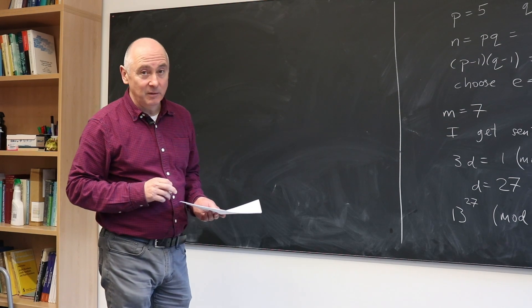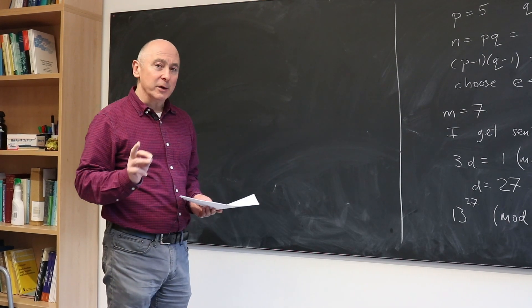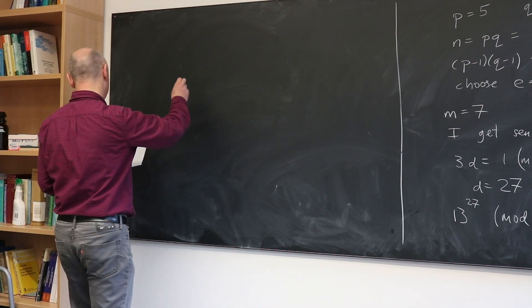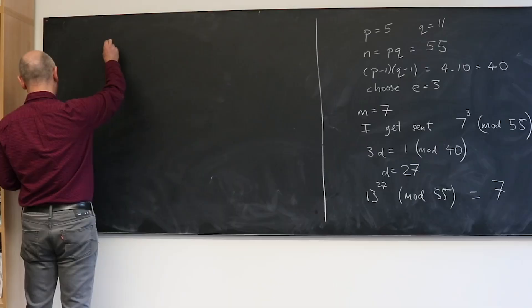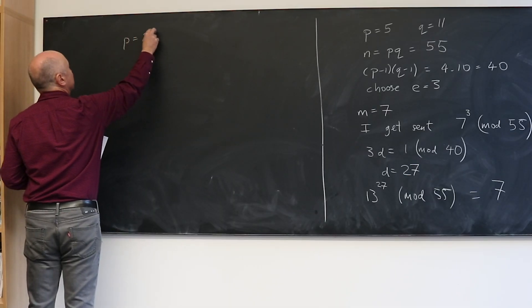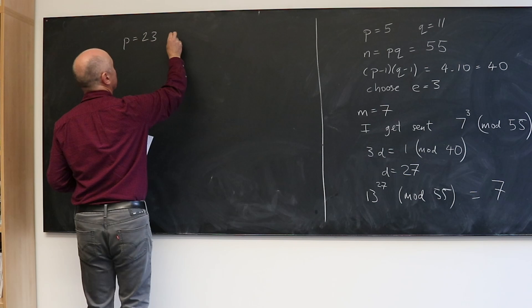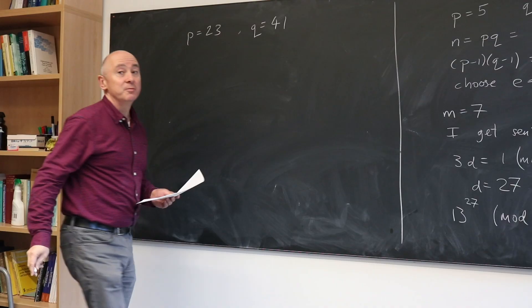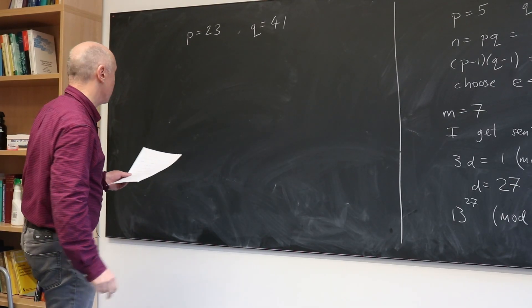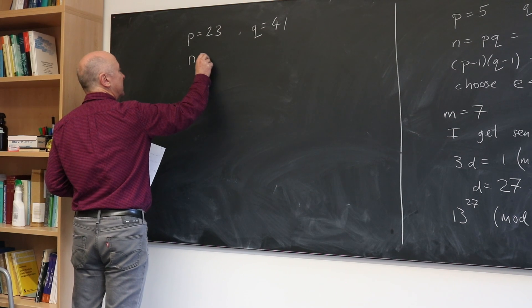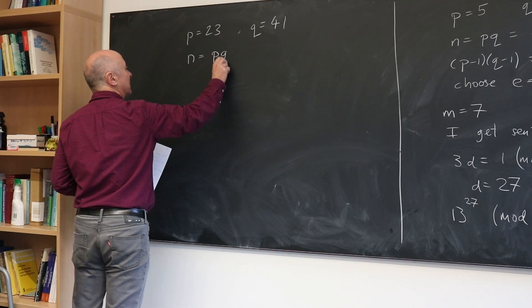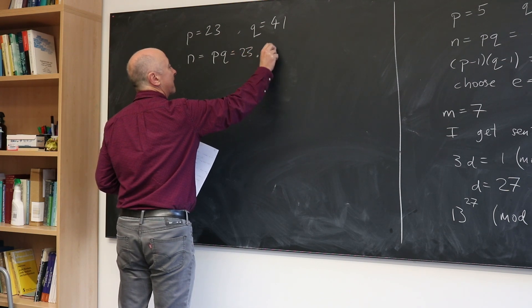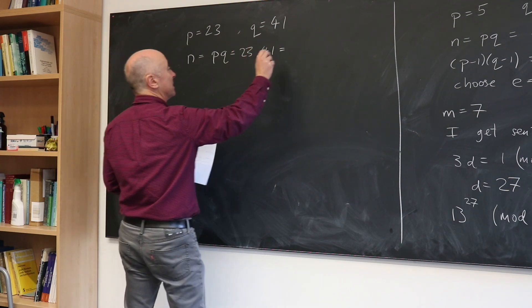So I thought I'd do a second example, and then I'll tell you what the mathematics is that underpins this. Here's the second example. It's where P is 23 and Q is 41. So those are my two prime numbers that I'm going to use.